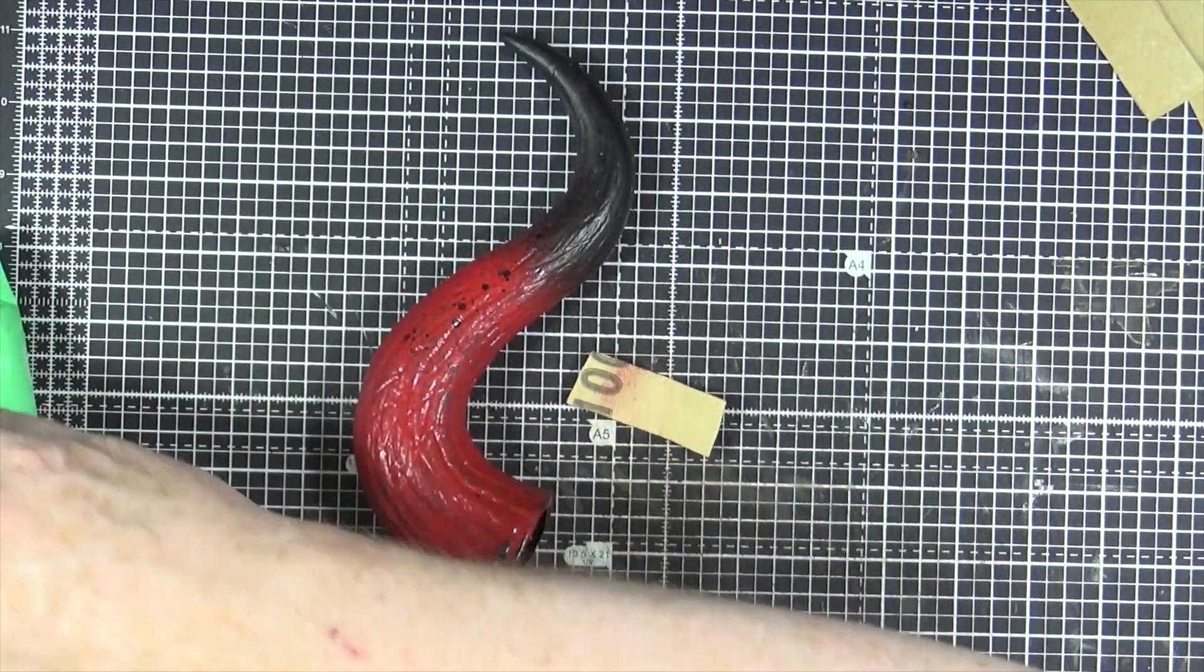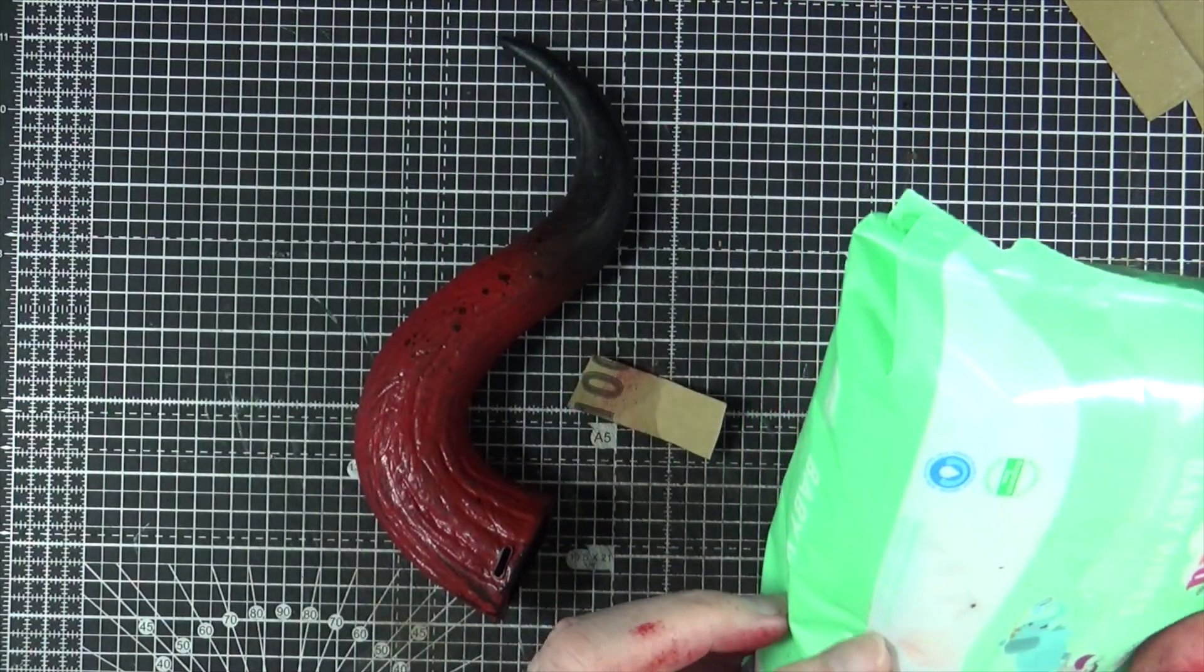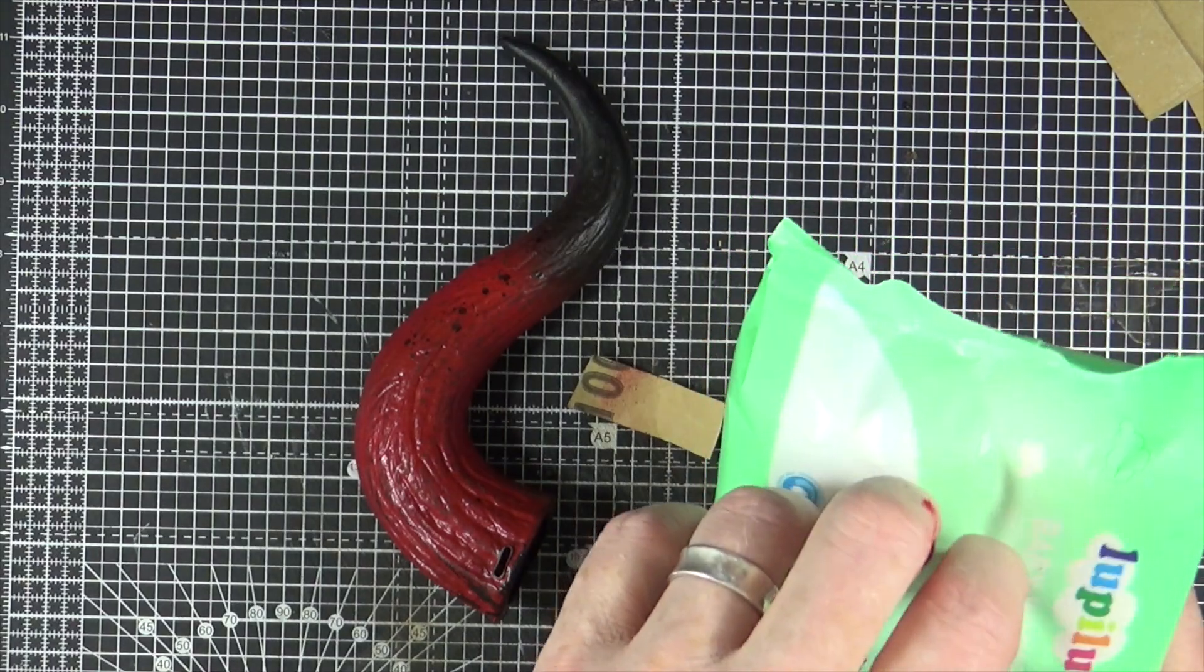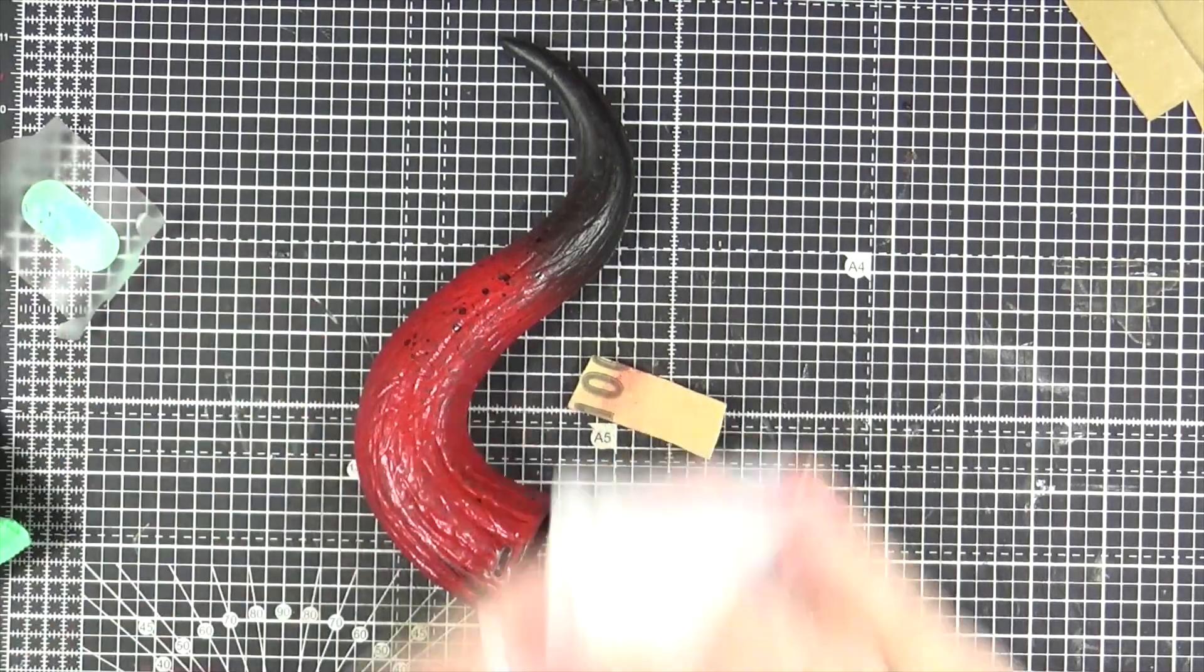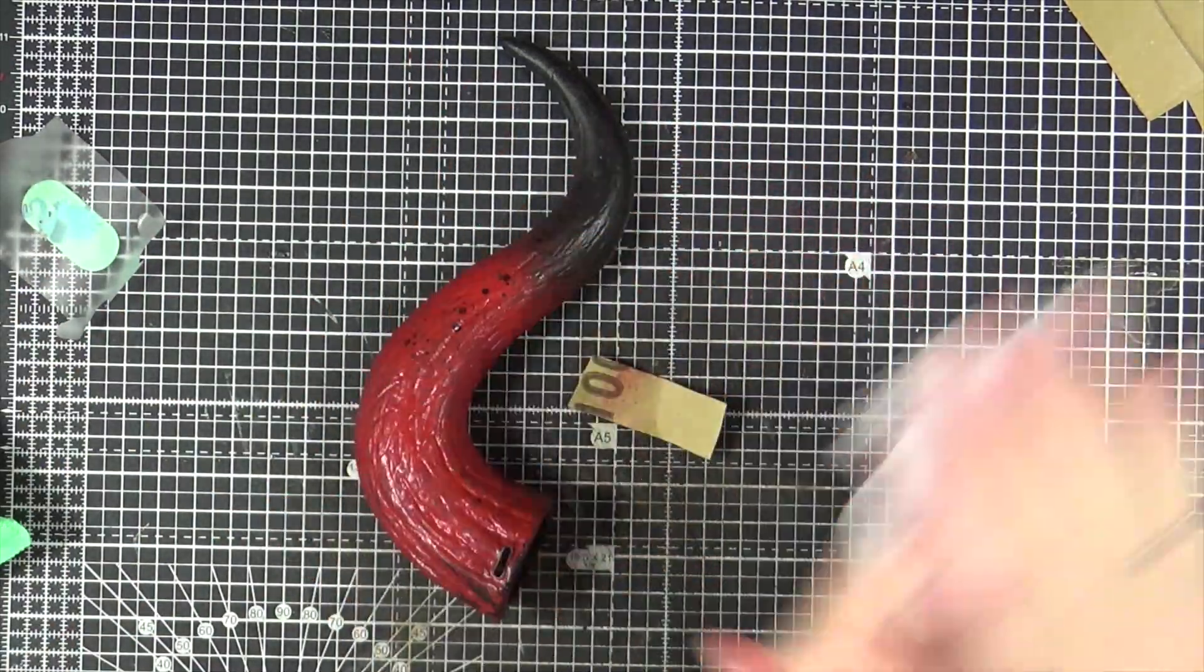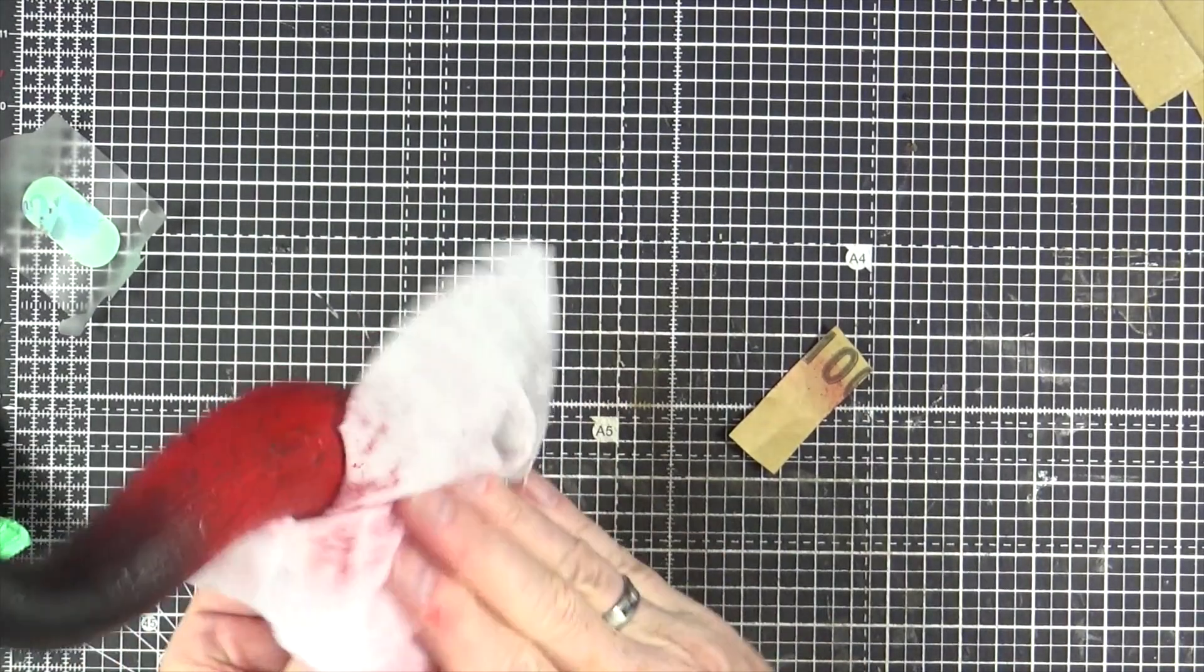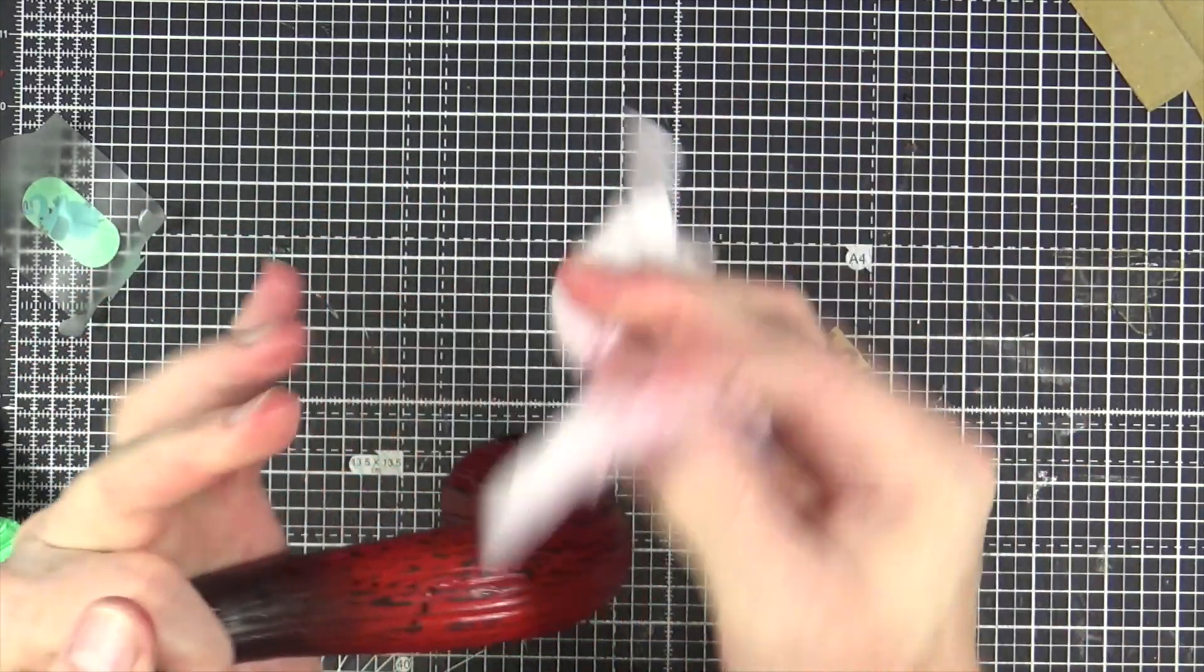So we need to employ some baby wipes. I'm sure I've already pre-opened this packet once, there we go. And then I'm just going to go over, just remove that red powder as much as I can.